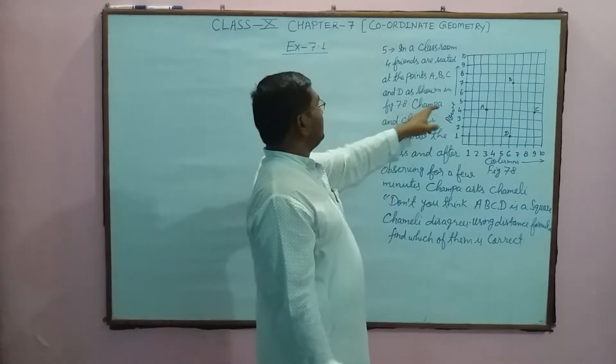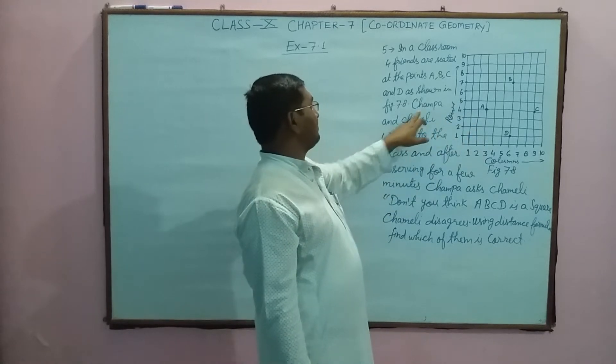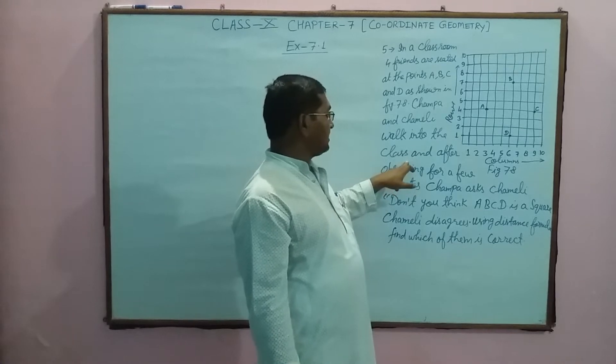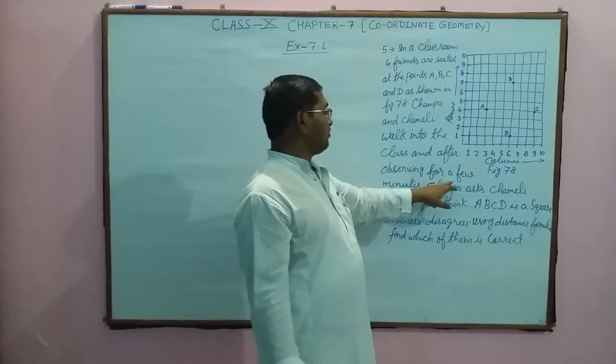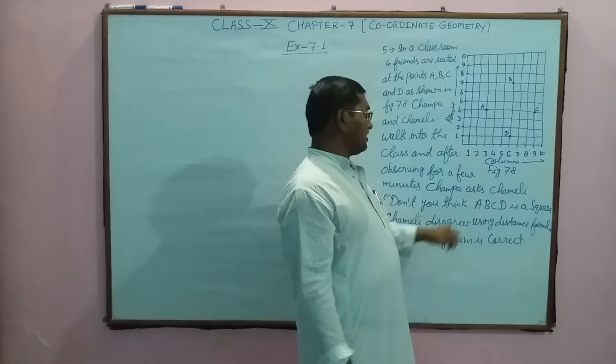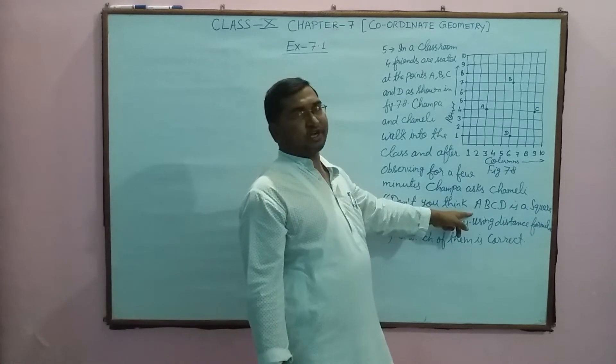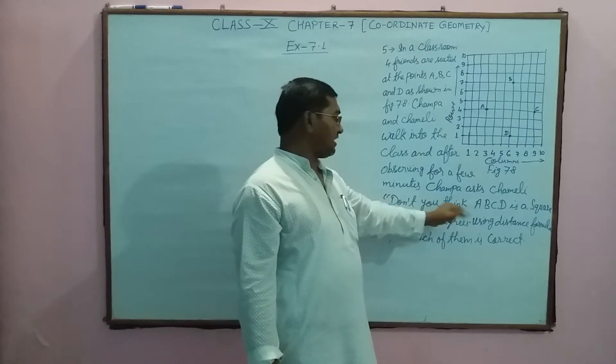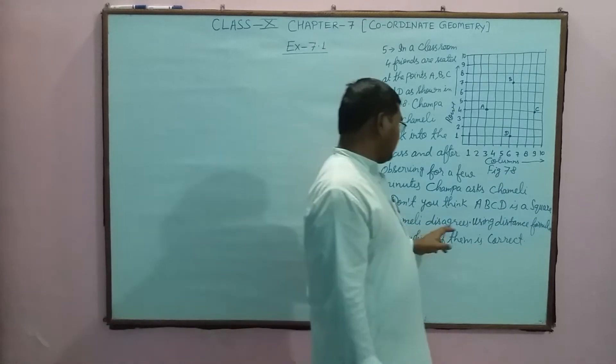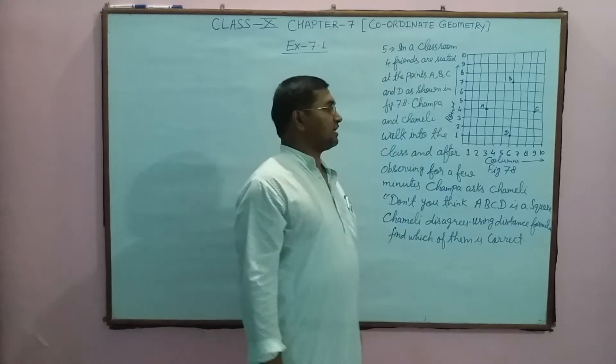Then Chumpa and Chamilie walk into the class. After observing for a few minutes, Chumpa asks Chamilie, don't you think that this is a square? Then Chamilie decides to use the distance formula to find which of them is correct.